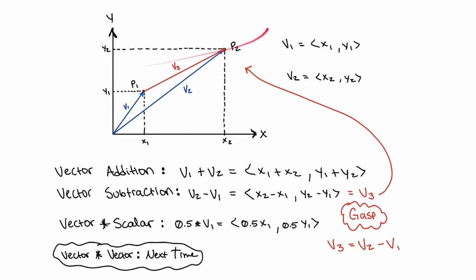This is an information-rich slide, but we're going to take it one step at a time. If you have the point P1, the vector that goes from the origin (0, 0) to P1 is written with angle brackets — we call it V for vector. Its X coordinate is X1 and its Y coordinate is Y1, so it points at P1. Similarly, the vector V2 starts at the origin and points at P2, with coordinates X2 and Y2. So a vector is basically just X and Y coordinates inside angle brackets.